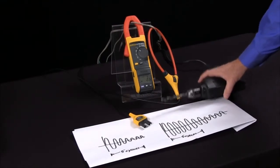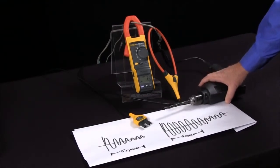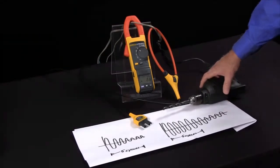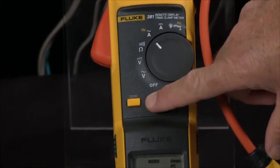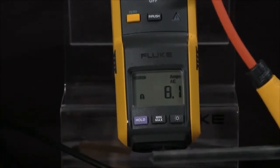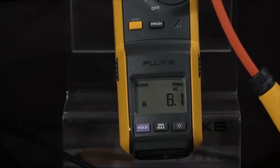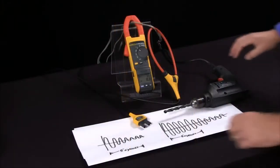To use the 381 to measure inrush current of a motor or other type of mechanical device, what we first do is turn it to amps and then press the inrush key. The meter will wait for you to start the motor and will be able to capture the inrush current.